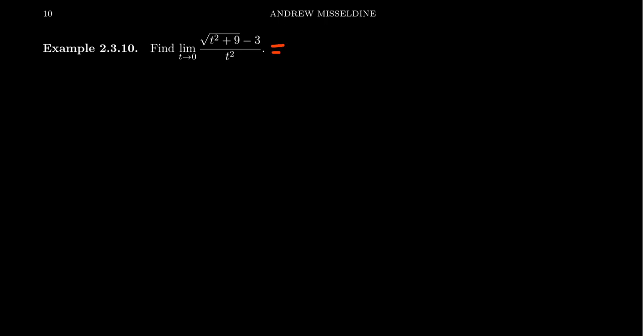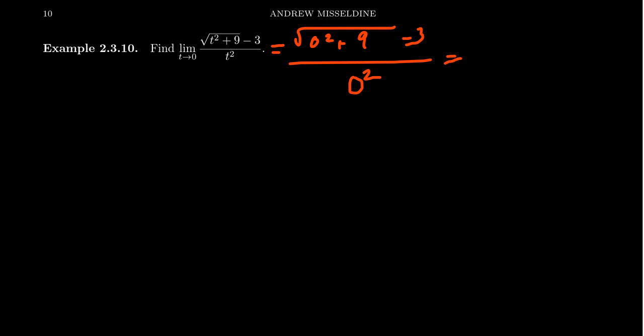If we just were to naively plug in t equals zero — because with a lot of these limit calculations, if you could just plug in zero for the variable, that often does the trick — you'll see that you get the square root of zero squared plus nine minus three, over zero squared. The denominator becomes zero. But in the numerator, you get the square root of nine minus three, which is three minus three, so the numerator is also zero. We get zero over zero.